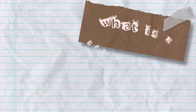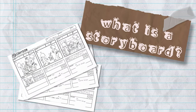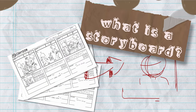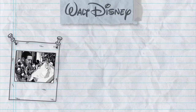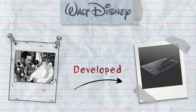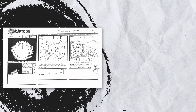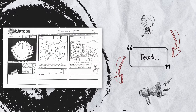A storyboard is a graphic representation of how a video will unfold shot by shot. The idea of storyboarding was developed at the Walt Disney Studio during the early 30s. A storyboard is a document that specifies the visual elements, text elements, and audio elements.